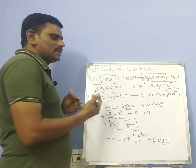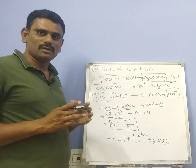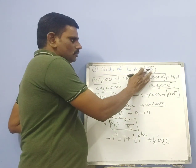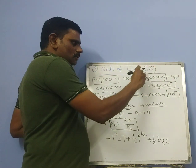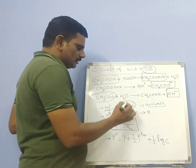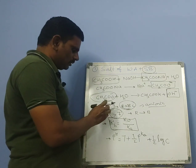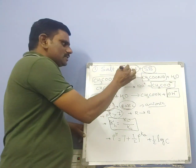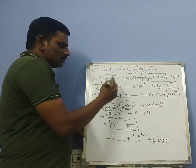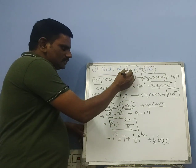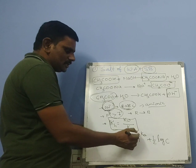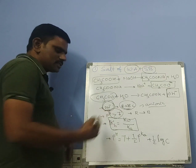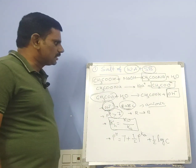By looking at the heading 'weak acid and strong base,' we can predict key points: since the strong base is present, the solution is basic in nature, so OH⁻ ions are formed. Because the acid is the weaker component, ka is used, giving kH = kw/ka. In the pH formula, 7 + ½pKa + ½log c is used because pH is greater than 7.